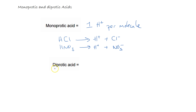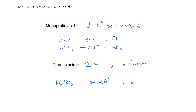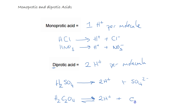Diprotic acids, on the other hand — as the name suggests — release two hydrogen ions per molecule. Examples include H₂SO₄, sulfuric acid, which dissociates to form 2H⁺ plus SO₄²⁻. Or perhaps a dicarboxylic acid, such as ethanedioic acid, which has two carboxylic acid groups that dissociate — though this would actually be a weak acid — to form two hydrogen ions and a single ethanedioate ion. Importantly, diprotic acids release two hydrogen ions per molecule.